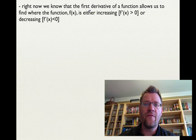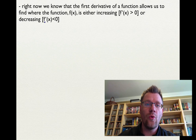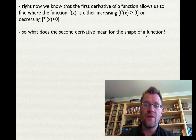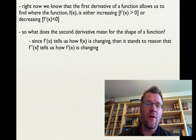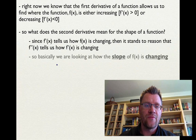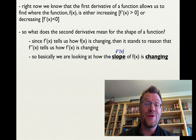We know that the first derivative of a function tells us where f of x is either increasing — that's where f prime is greater than zero — or decreasing — that's where f prime is less than zero. So what does the second derivative mean for the shape of a function? Since f prime x tells us how f of x is changing, it stands to reason that f double prime x tells us how f prime x is changing — it's the change in the slope, or the change in the change of the function.